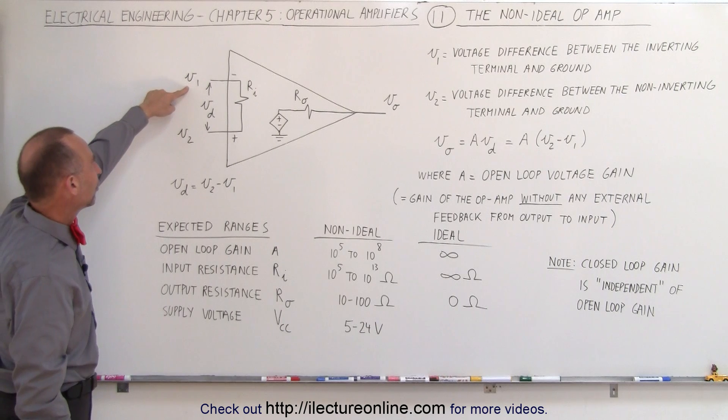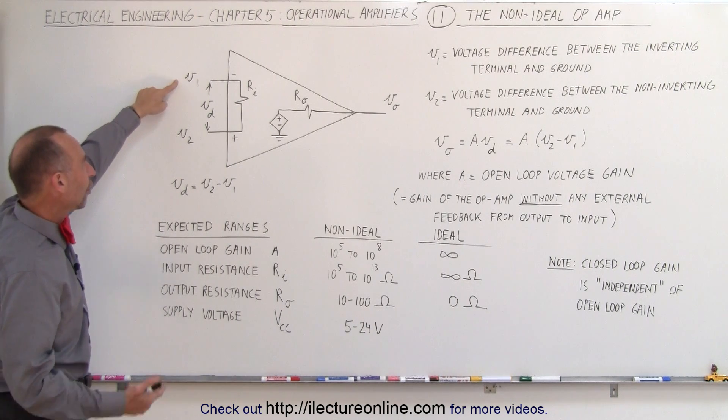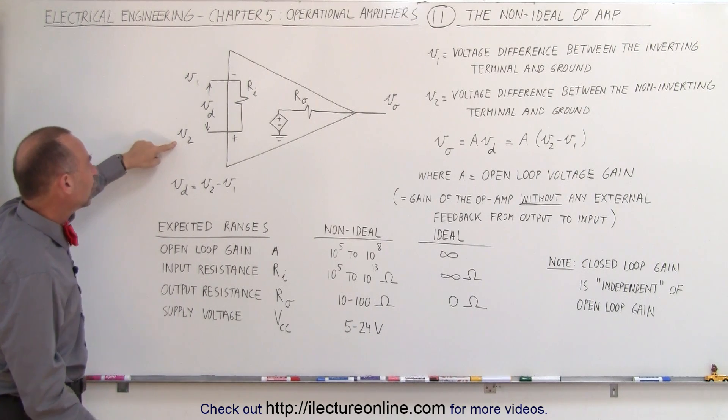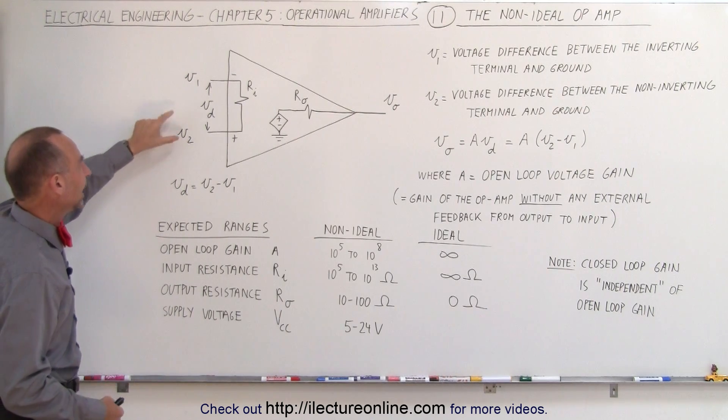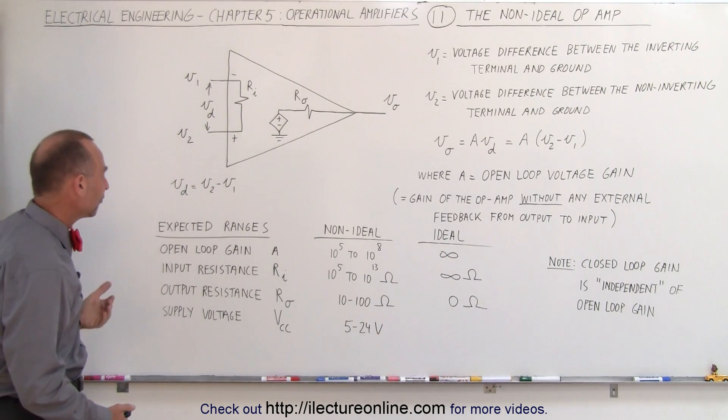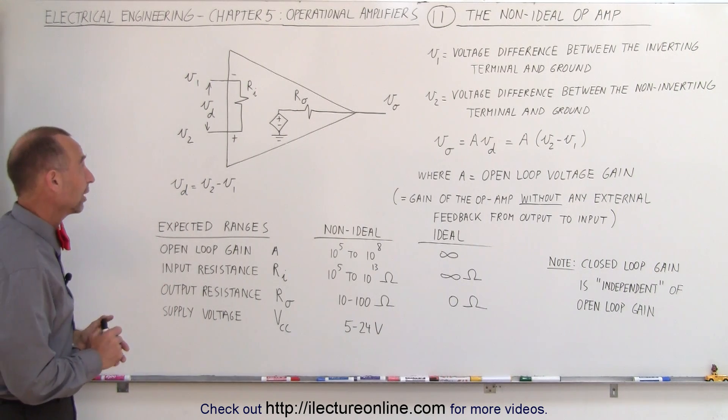Notice we have the inverting and non-inverting input. We have what we call V1 which is the voltage at the inverting input and V2 the voltage at the non-inverting input, and then the difference between the voltage is called V sub D, the voltage difference, which is simply V2 minus V1, and in that particular order, that's important.